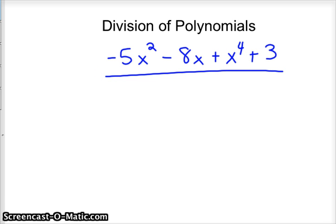It's pretty tricky. So a polynomial, let's say you had something like this. Let's say you had negative 5x squared minus 8x plus x to the 4th plus 3 divided by x minus 3. Yuck, that looks pretty nasty.